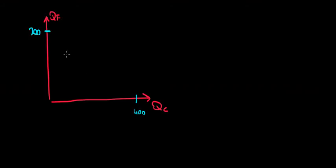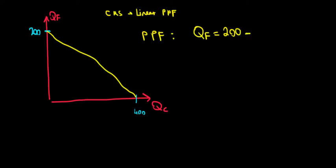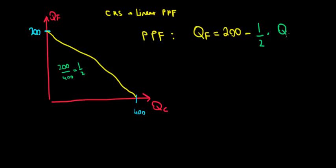Recall that we have a linear PPF because of constant returns to scale — this is a property explained in the microeconomics playlist webcasts. Since it is a line, the PPF is: quantity of food equals an intercept of 200 minus a slope times quantity of clothing. The slope is constant, so taking the ratio of rise to run: 200 over 400, that gives a slope of one-half.